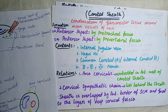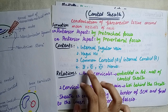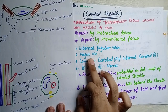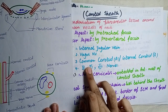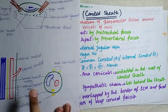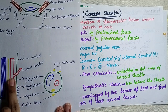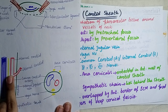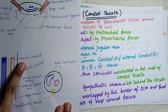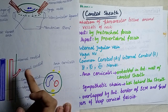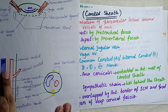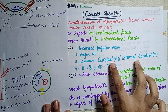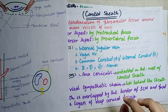Now we talk about the contents. The internal jugular vein is present laterally. Medially, the common carotid artery is present, along with the vagus nerve. When the common carotid artery divides at the level of the T3 and T4 vertebra into the external and internal carotid arteries, the external carotid artery exits the sheath. So the external carotid artery is not a content; the internal carotid artery is the content. Therefore, either the common carotid artery or the internal carotid artery are contents of the carotid sheath.